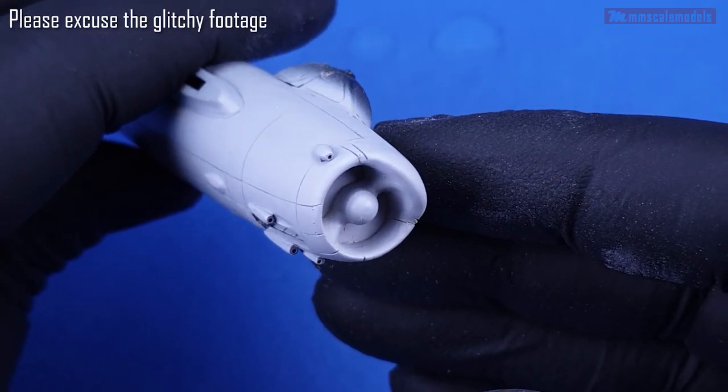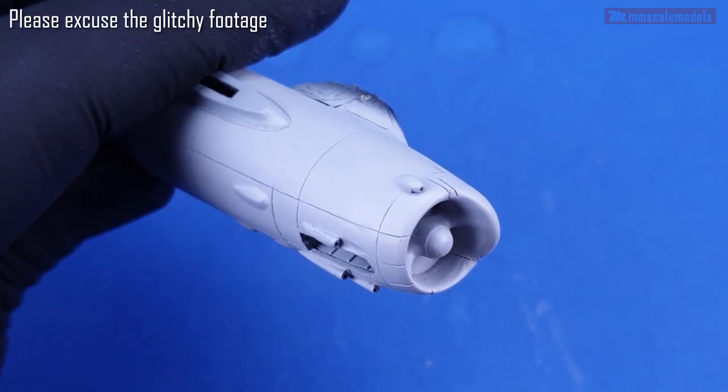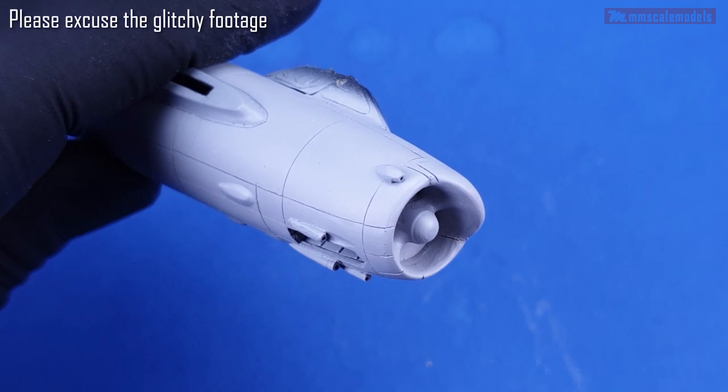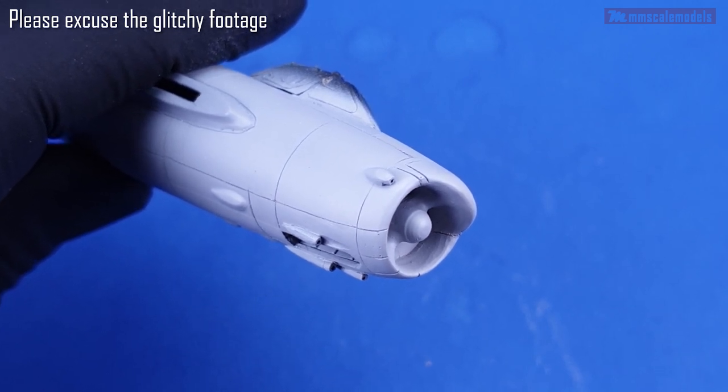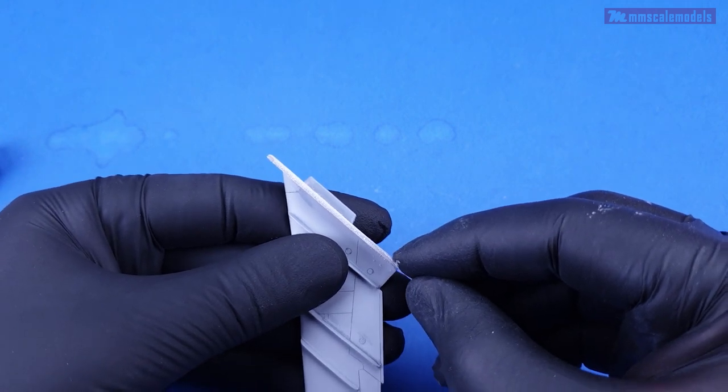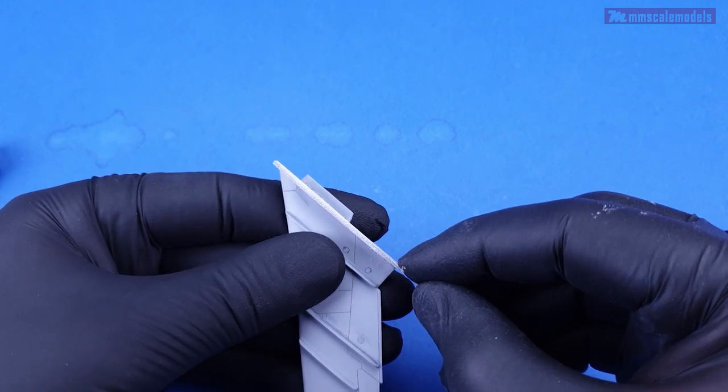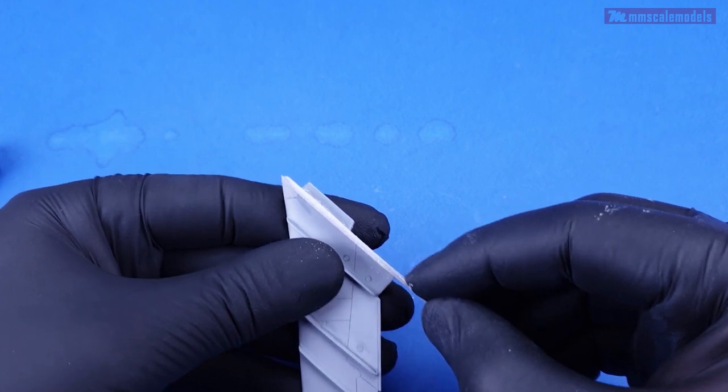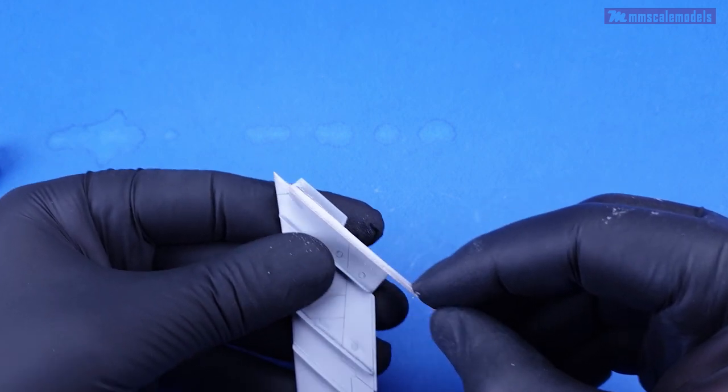Same thing applies to the camera gun on the side of the intake. Just too small and fiddly to comfortably show the process on camera. To improve the wing root joints first I added some shims to make more solid connection between the wing and the fuselage. Then I sanded away the excess plastic.